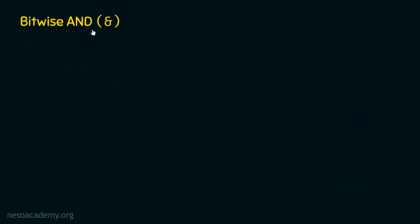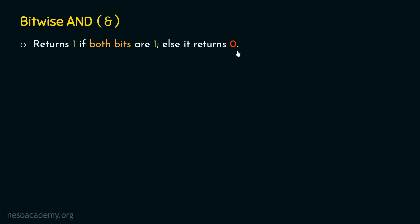The bitwise AND operator returns 1 if both bits are 1, else it returns 0. As it is a bitwise operator, it can only be operated on bits — it returns 1 if both bits are 1, else it returns 0. Let's discuss one example to understand how the bitwise AND operator works.